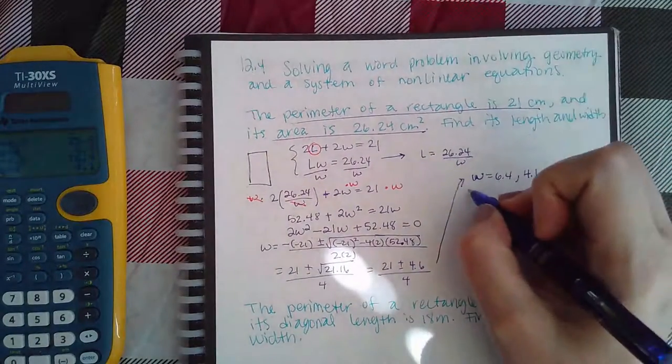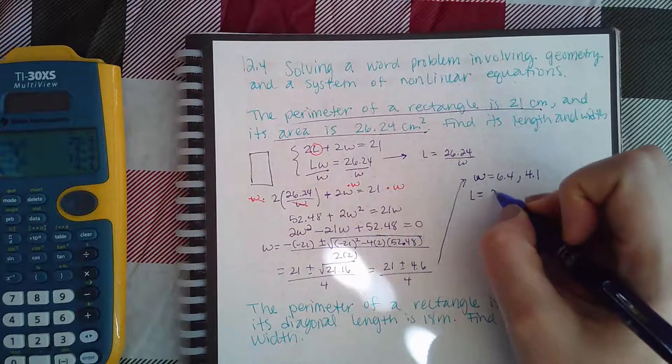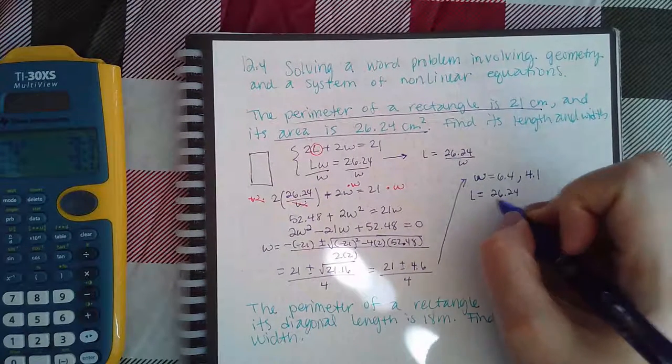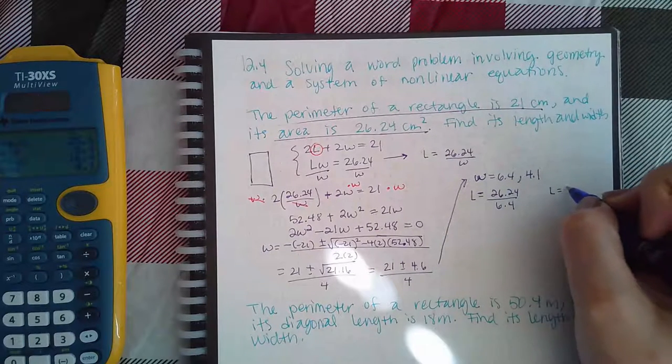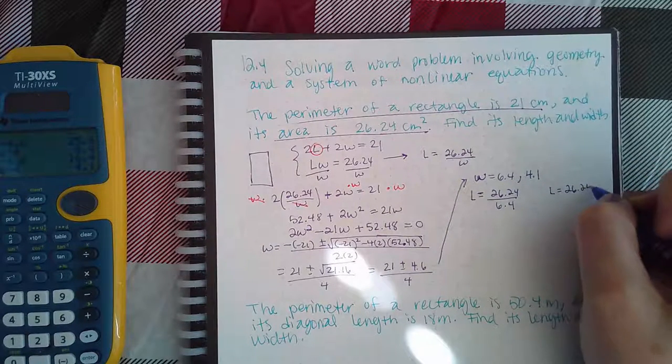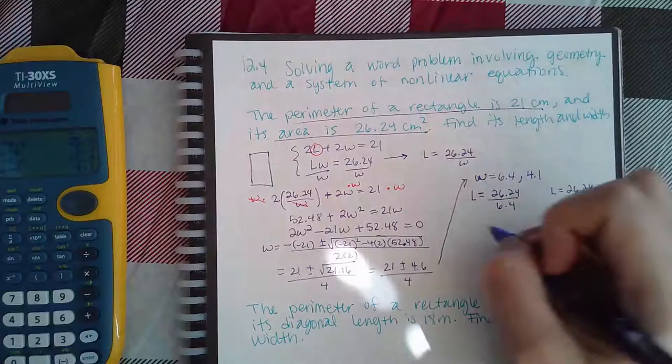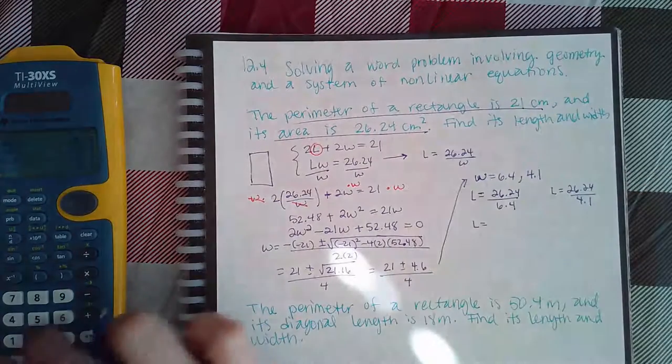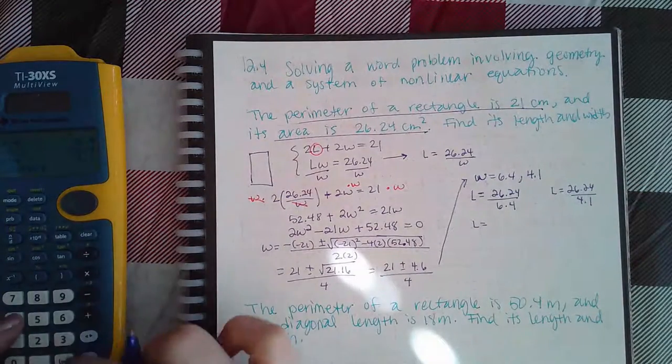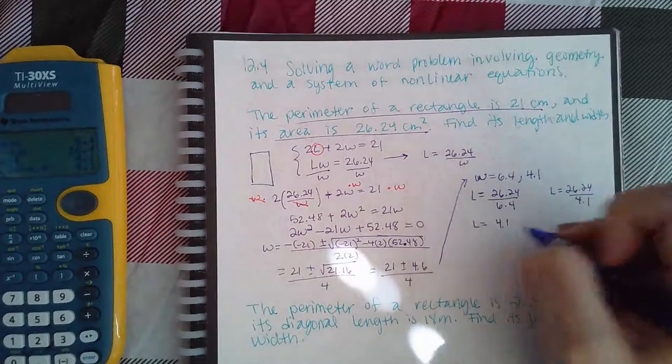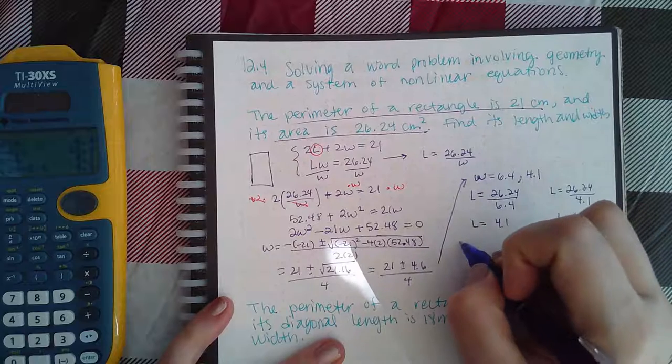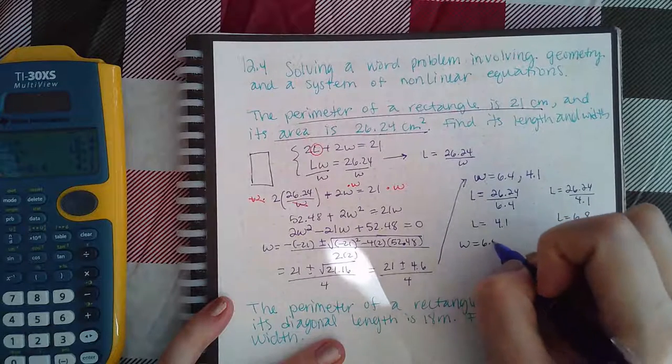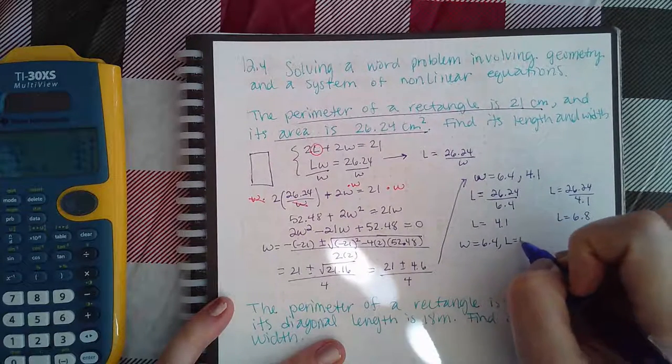And then I also have 21 minus 4.6 divided by 4, which gives me 4.1. So what are the lengths that go together? Then I would have 26.24 over 6.4 and I would have 26.24 over 4.1.